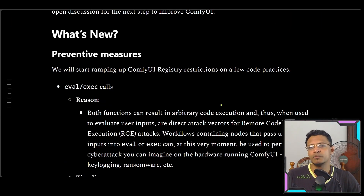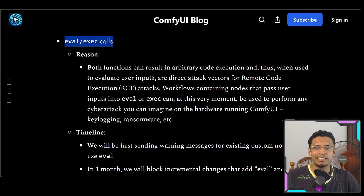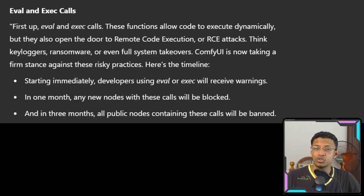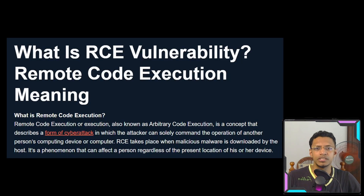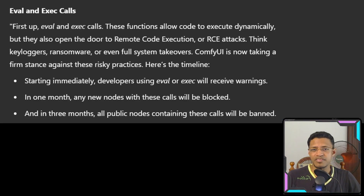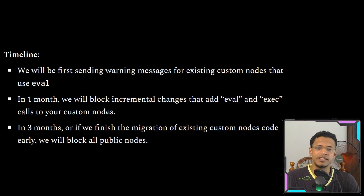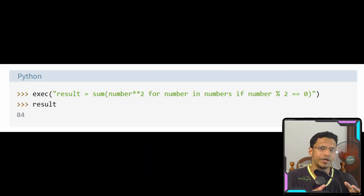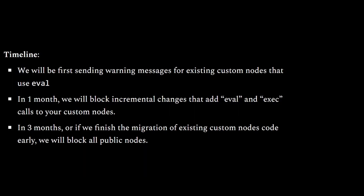What's new here is they also mentioned preventive measures. The first one is about eval and exec calls. These functions allow code to execute dynamically, and it is possible to use them for RCE attacks — remote code execution — which means you can get things like keyloggers, ransomware, or even full system takeovers. The developers mentioned that starting immediately, all developers using these functions in their code will receive a warning, and in one month they are going to block those custom nodes.